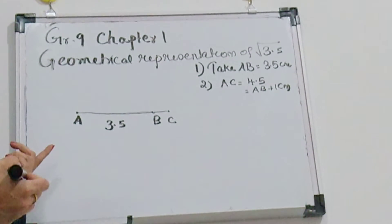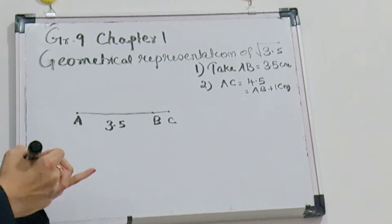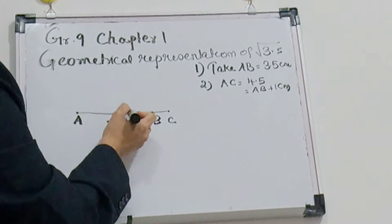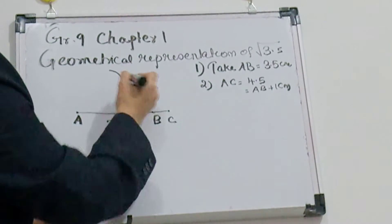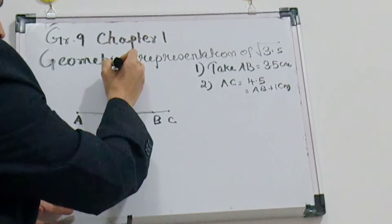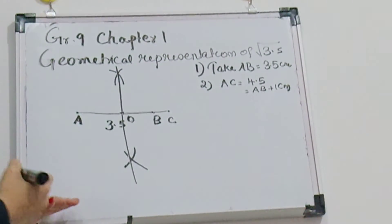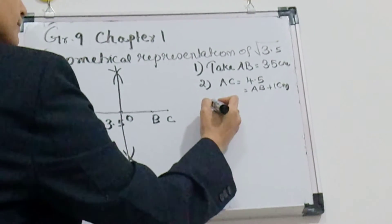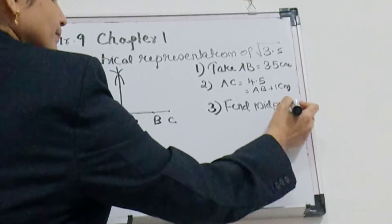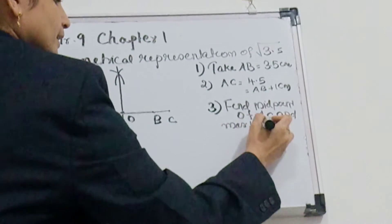Before that you find out the midpoint of AC. How will you find the middle point of AC? You keep the compass here and take more than half of this line and cut an arc here and cut an arc here. And here also you keep the compass and cut an arc here and cut an arc here. And you will join, then you will get the midpoint of AC. You mark it as O. Now third step is find midpoint of AC and mark it as O.